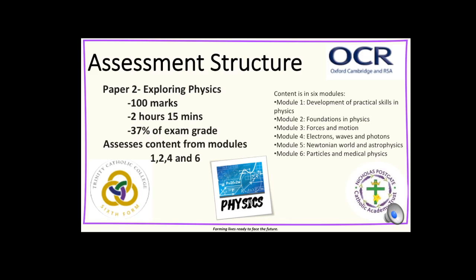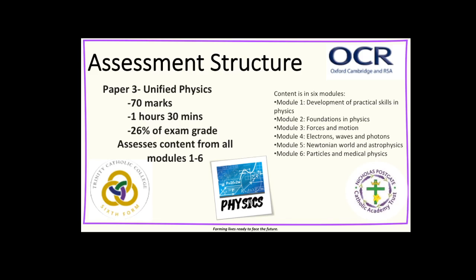Paper 2 is the exploring physics paper. This is out of 100 marks again, 2 hours 15 minutes and 37% of your exam grade. This assesses content from modules 1, 2, 4 and 6. The final paper is Paper 3, the unified physics paper. This is out of 70 marks, you get 1 hour 30 minutes and this forms 26% of your exam grade. This assesses content from all modules.